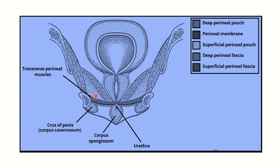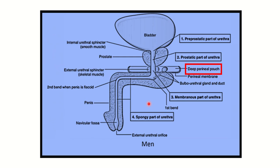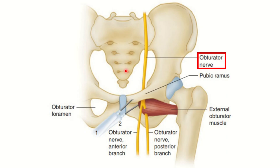Looking at this diagram, this highlighted area is the deep perineal pouch. We need to identify which structure lies within this area. The deep perineal pouch is present between the prostate and the bulb or shaft of the penis — it is a very small area between the shaft of the penis and the prostate. The superficial perineal pouch lies more anteriorly.